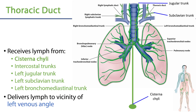The thoracic duct is the major lymphatic vessel of the body. It's going to receive lymph from the cisterna chyli, which is the point at which nearly all of the lymph from inferior to the diaphragm gathers. It will then also receive lymph from various intercostal trunks throughout the thorax.